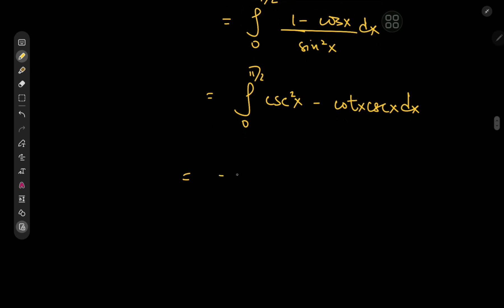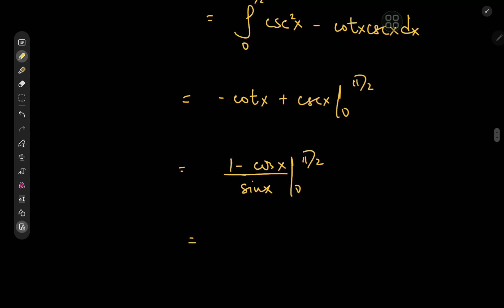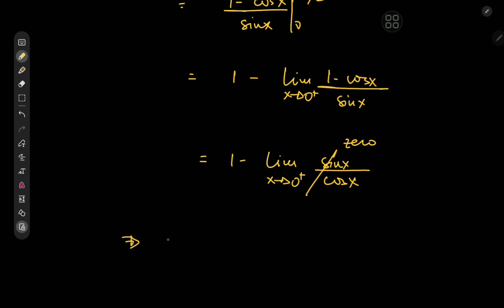The integration here is pretty straightforward. We get negative cotangent x plus cosecant x, evaluated between 0 and π/2. Expanding, cotangent is cosine over sine, so we have (1 minus cos x)/sin x with limits 0 and π/2. As x approaches π/2, that gives (1 minus 0)/1 = 1, minus the limit as x tends to 0 from the right of (1 minus cos x)/sin x. Invoking L'Hôpital's rule gives sine x over cosine x, which tends to 0. So I₁ = 1.